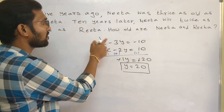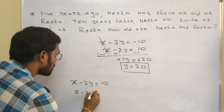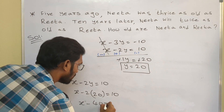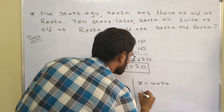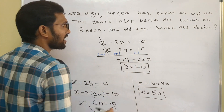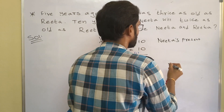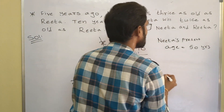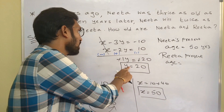Now substituting Y equals 20 into Equation 2: X minus 2 into 20 equals 10, so X minus 40 equals 10, giving X equals 50. So X equals 50 and Y equals 20. Since X is Nita's present age, Nita's present age is 50 years. And since Y is Rita's present age, Rita's present age is 20 years.